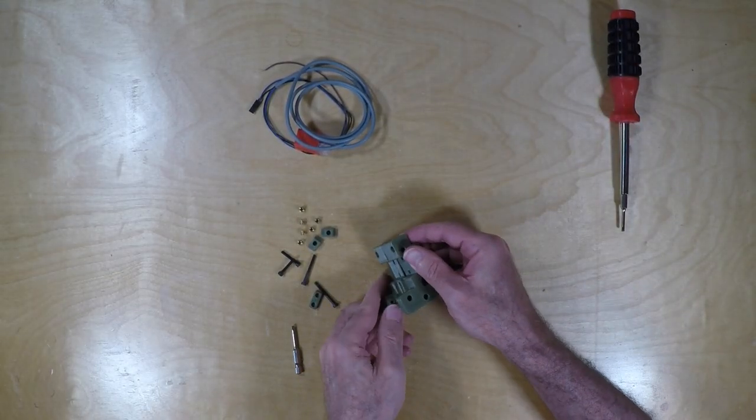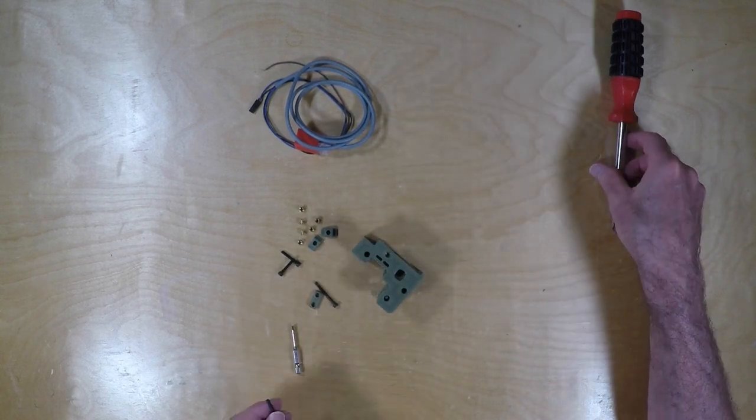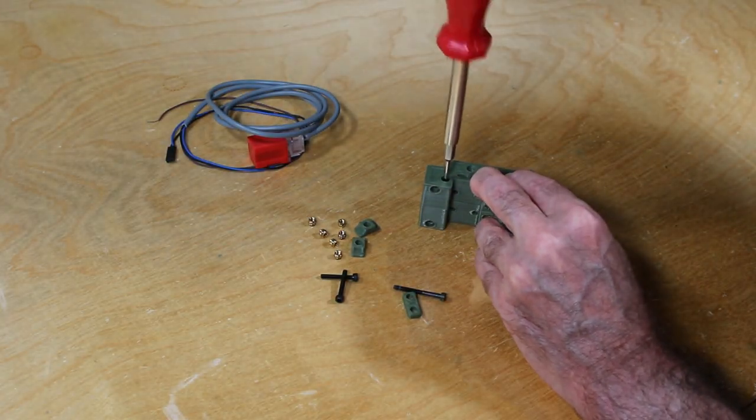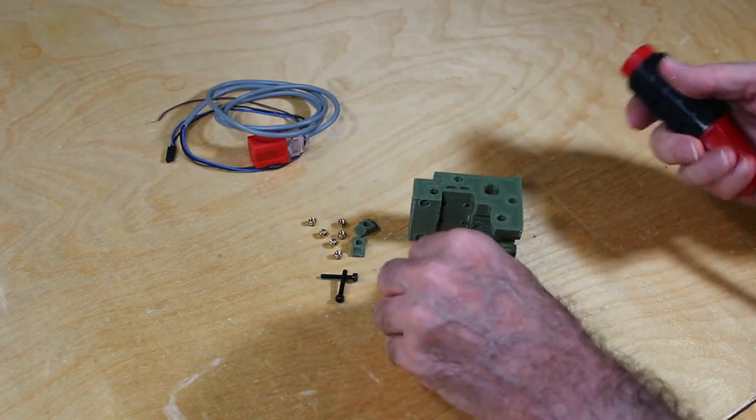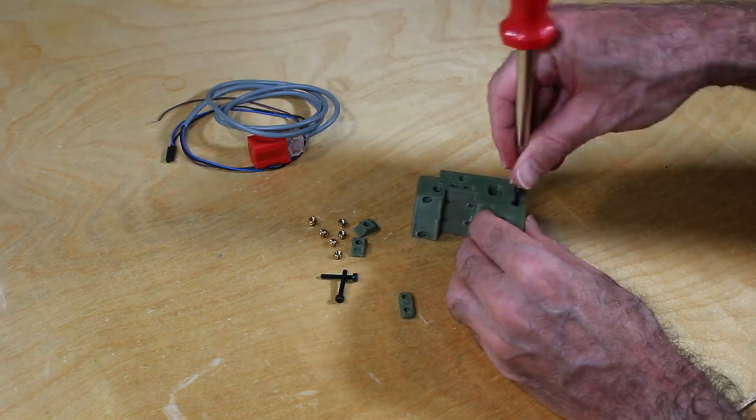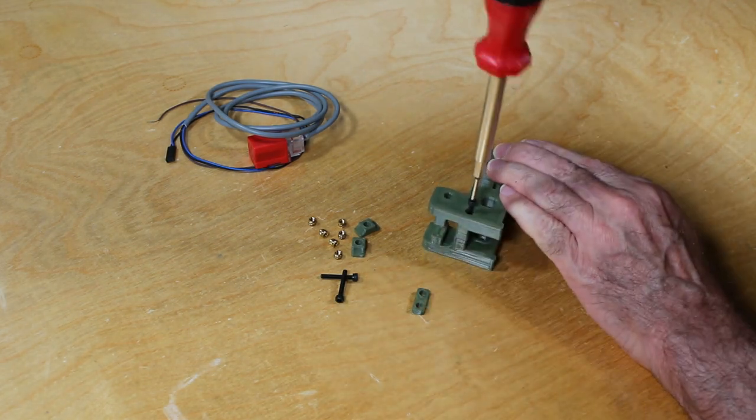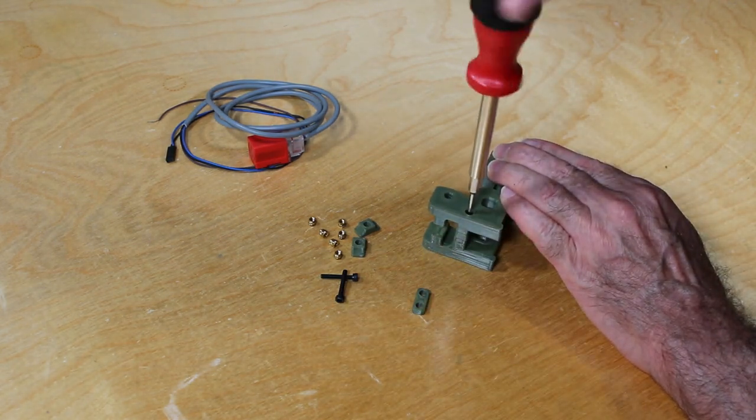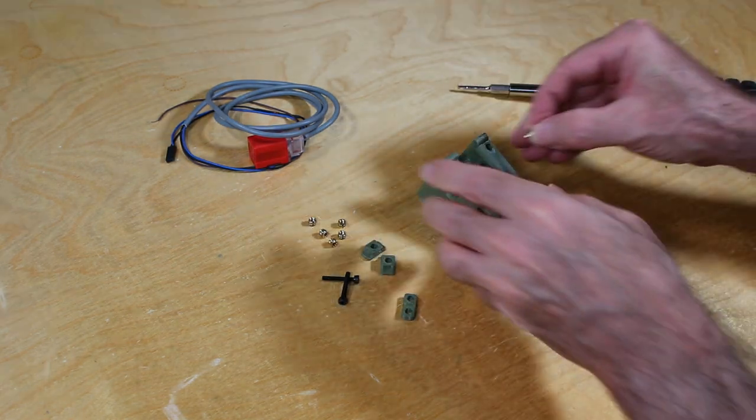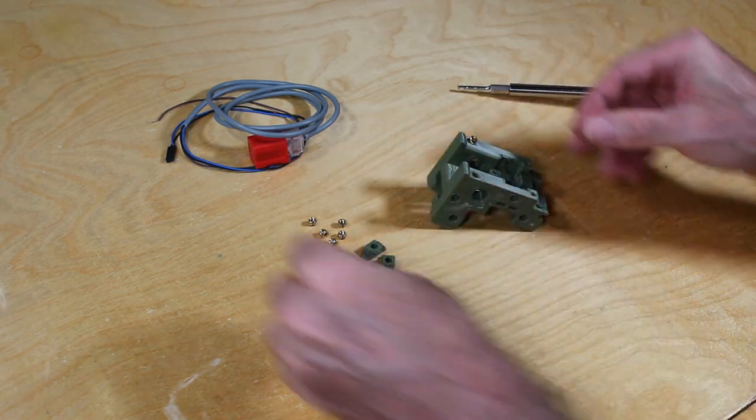The two halves of the carriage are keyed to fit together in only one way, and then insert the M3 screws. Then we insert the heat sets.